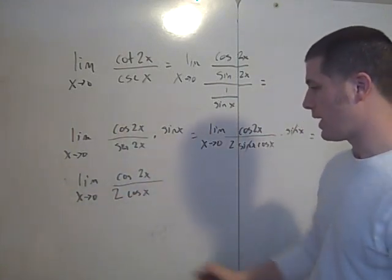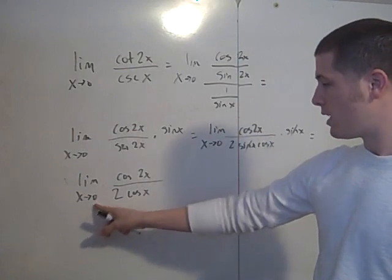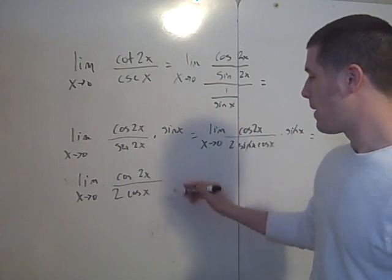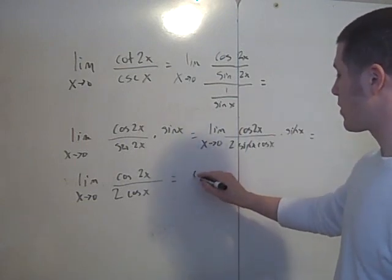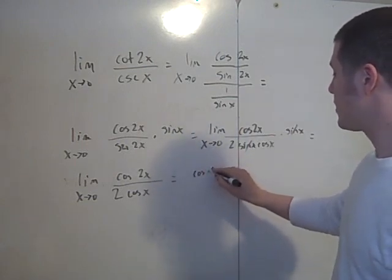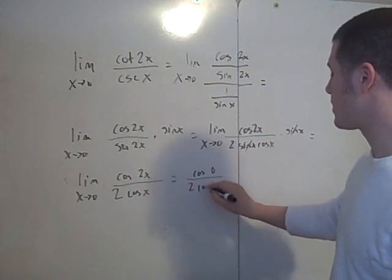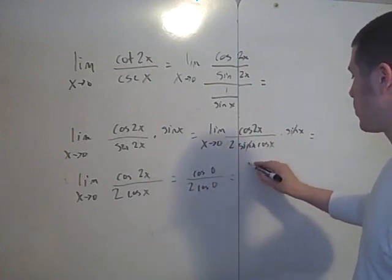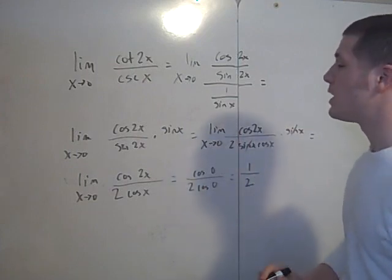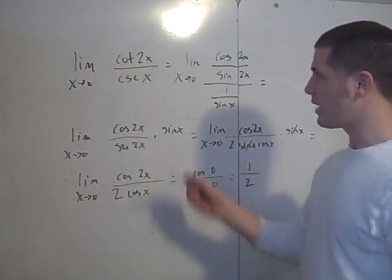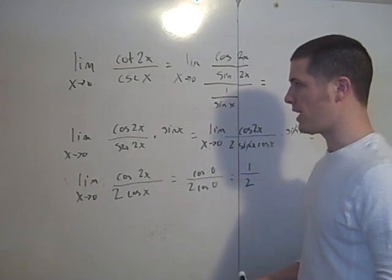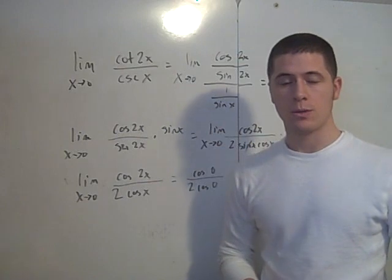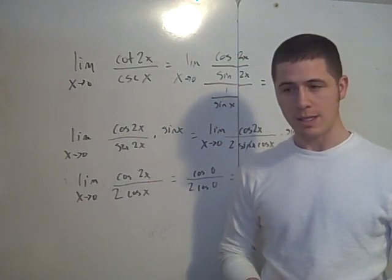Now we can substitute 0 in. Since 2 times 0 is 0 and cosine of 0 is 1, this gives cosine 0 over 2 times cosine 0, which is 1 over 2. So the limit as x goes to 0 of the cotangent of 2x over the cosecant of x is 1 over 2. I hope this helps when you're computing trigonometric limits.